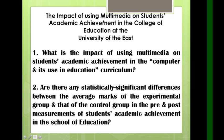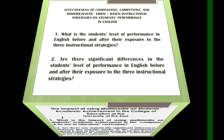The fourth title is: The Impact of Multimedia on Students' Academic Achievement in the College of Education. Question one — what is the impact of using multimedia — is descriptive. Question two asks about statistically significant differences between the average marks of the experimental group and the control group in pre- and post-measures. Since it is comparing pre-test and post-test, we will use paired sample t-test.